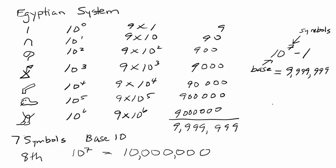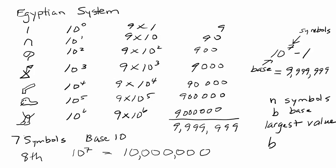In general, if you have a system with n symbols and a base of b, then the largest value in a simple grouping system is b raised to the n minus 1. This is a handy shortcut when you're given the base and the number of symbols.